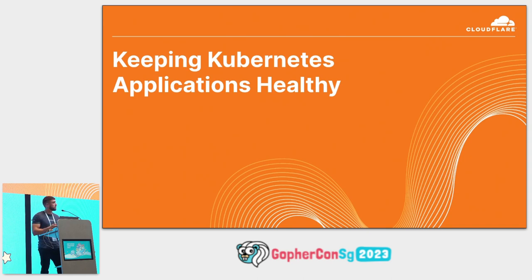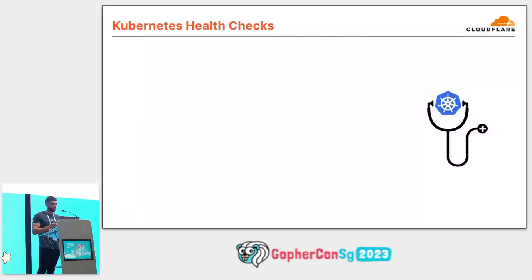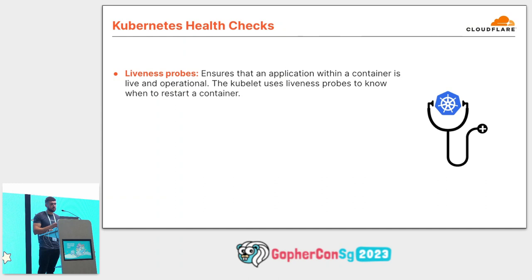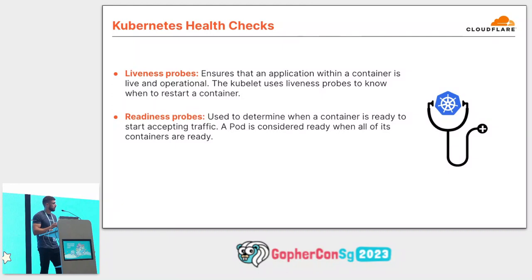Kubernetes has some good utilities for health checks. There are three types: liveness probes, which are used to know when to restart an application container — they should catch a deadlock when an application is running but unable to process requests. Readiness probes are used to know when a container is ready to start accepting traffic. Kafka consumers don't typically accept HTTP traffic, so readiness probes are kind of redundant here, and we only tend to set liveness checks.